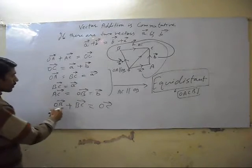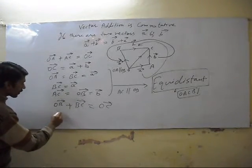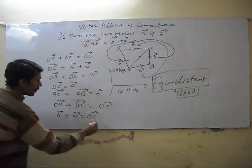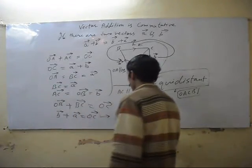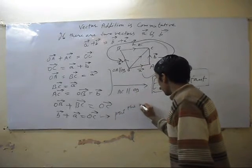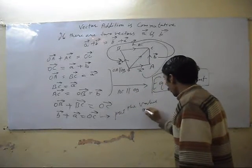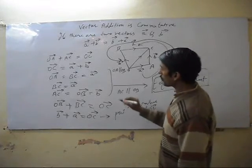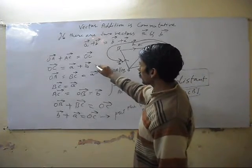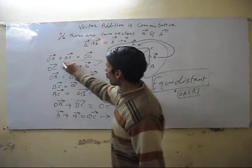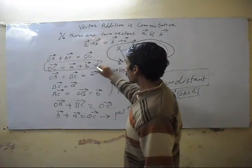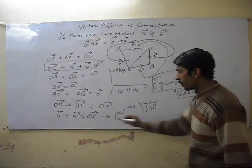OB vector plus BC vector equals OC vector. OB plus BC, where OB is B vector and BC is A vector, equals OC. Now put the value of OC vector. The value is this, we can put this value here.